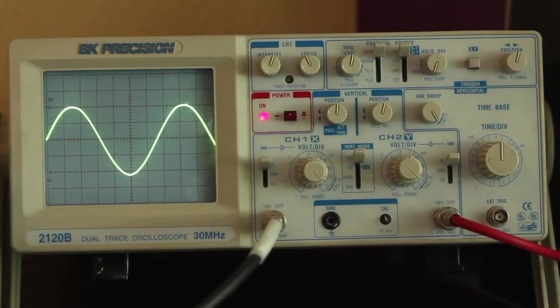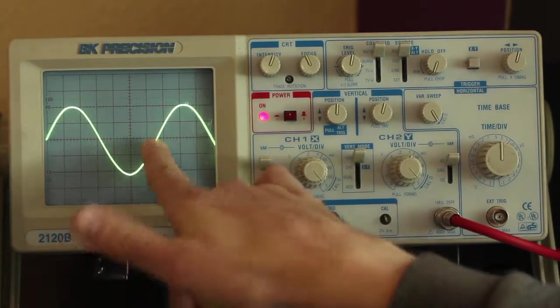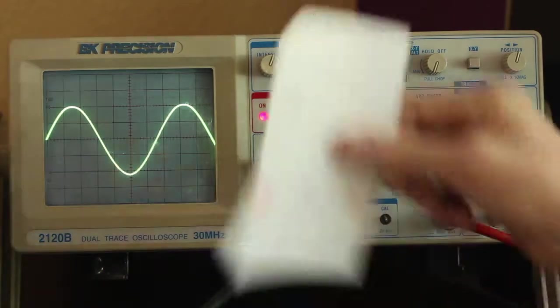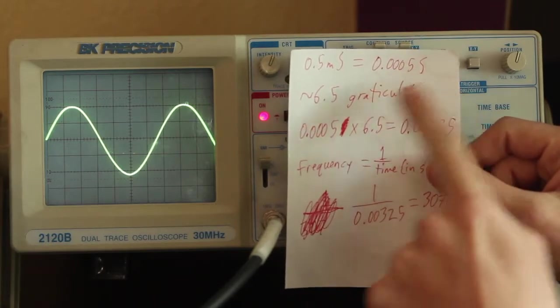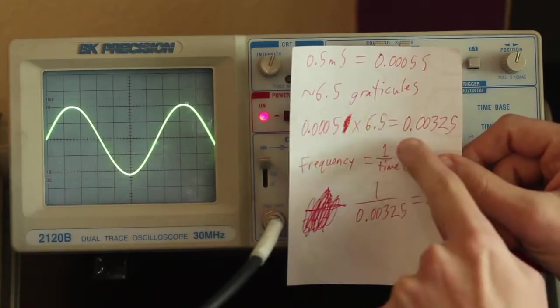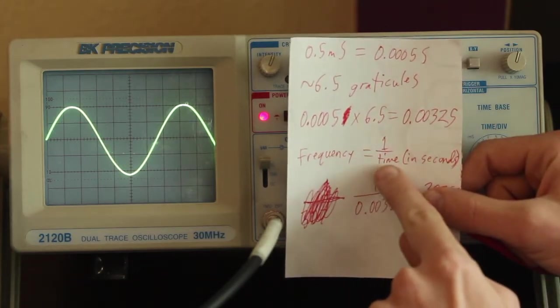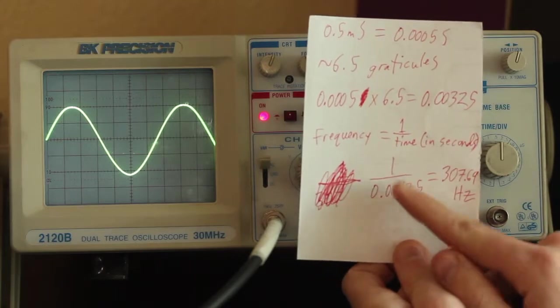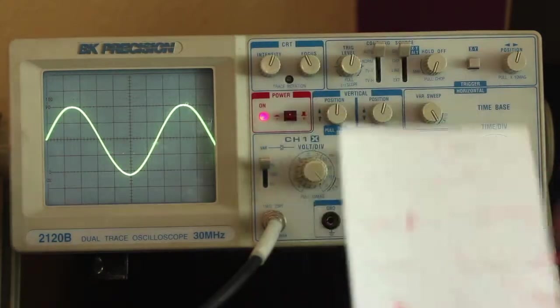So if I count the number of graticules, 1, 2, 3, 4, 5, 6, and about a half, we have 6.5 graticules. We are set to 0.5 milliseconds. So 0.5 milliseconds equals 0.0005 seconds, approximately 6.5 graticules. So then that 0.0005 times 6.5 graticules gives us 0.00325. Since frequency is 1 divided by time or the inverse of time in seconds, then we put that number into our calculation, 1 over 0.00325 and we get 307.69 hertz or cycles per second. Again, it's not a precision tool, but it gets us in the ballpark and we can get an idea.